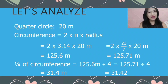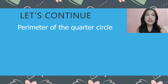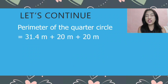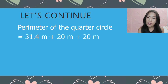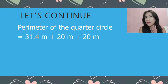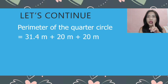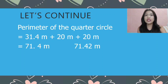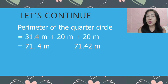That's only the one-fourth of the circumference; we're looking for the perimeter. The perimeter of the quarter circle is 31.42 plus 20 plus 20. Why add 20 twice? Because in a quarter circle we add the radius twice. In the semicircle we added the diameter once, but here in the quarter circle we use it twice. So 31.42 plus 20 plus 20 gives 71.42 meters.